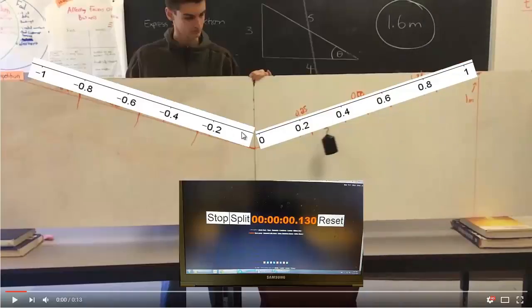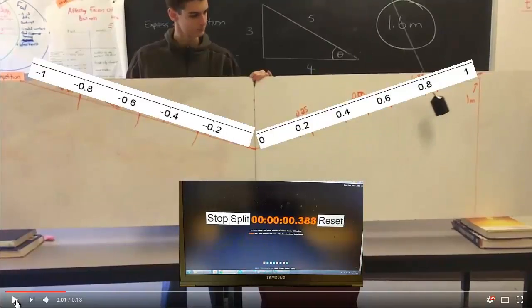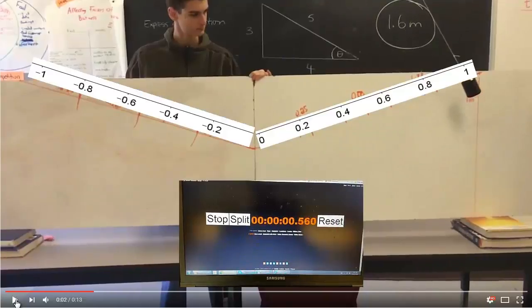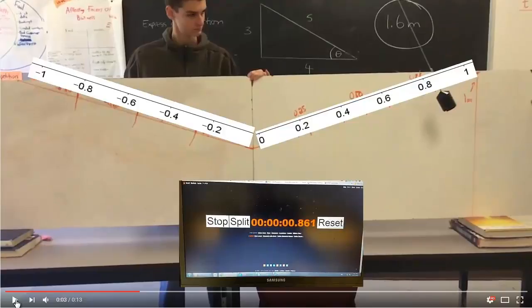So, for each quarter of the swing, I want you to collect about three pieces of data, and make sure that you get the very end of the swing. Enter those into Desmos, and we are going to try and model this with an equation.